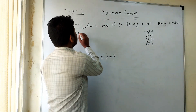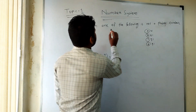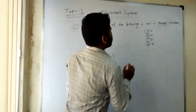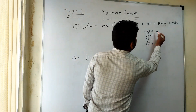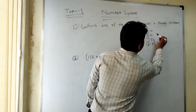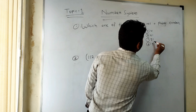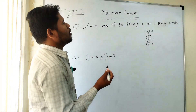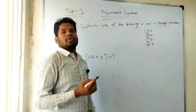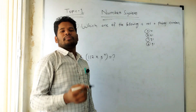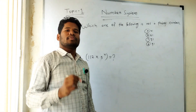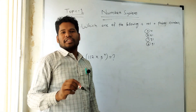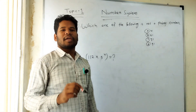Friends, the first question is: which one of the following is not a prime number? The options given are 31, 61, 71, and 91. First of all, what is a prime number? A prime number is a number which is divisible only by itself and 1. That's called a prime number.